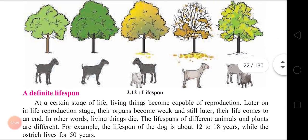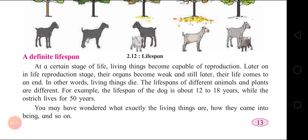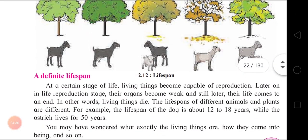A Definite Lifespan - everyone has their definite lifespan. At a certain stage of life, living things become capable of reproduction. Later on in life their organs become weak, and still later their life comes to an end - in other words, living things die. The lifespan of different animals and plants is different. For example, the lifespan of a dog is about 12 to 18 years, while the ostrich lives for 50 years. Every living thing has a fixed lifespan; life comes to an end with death.